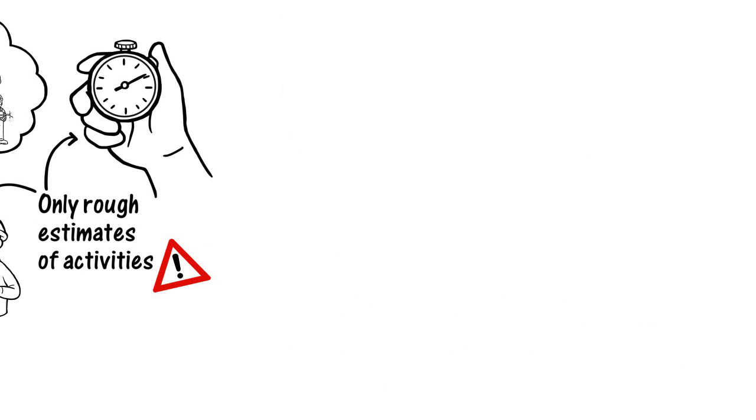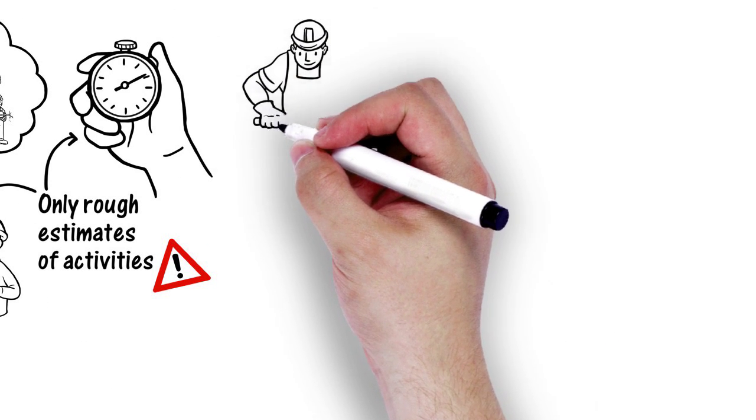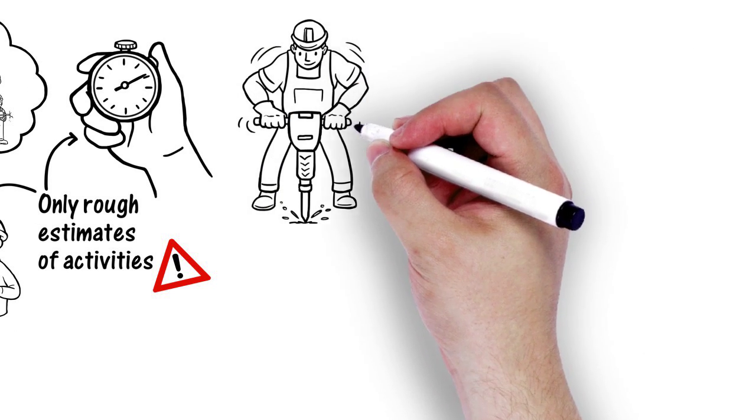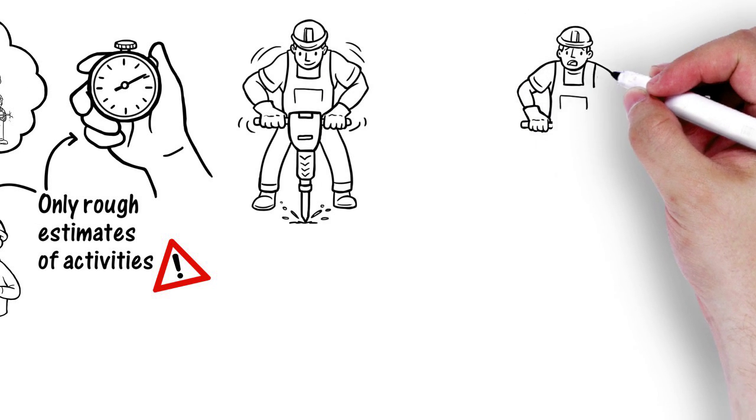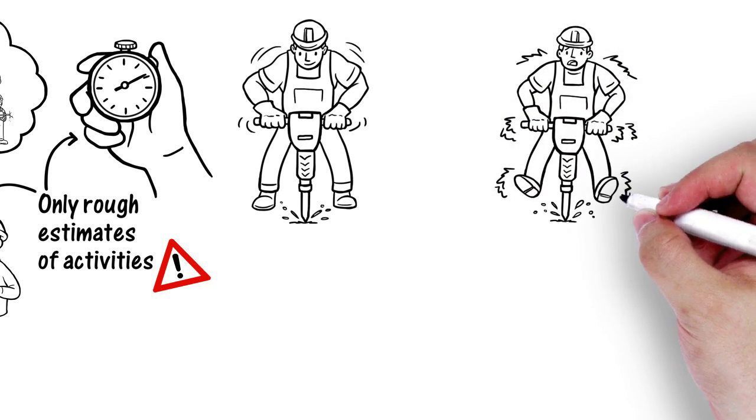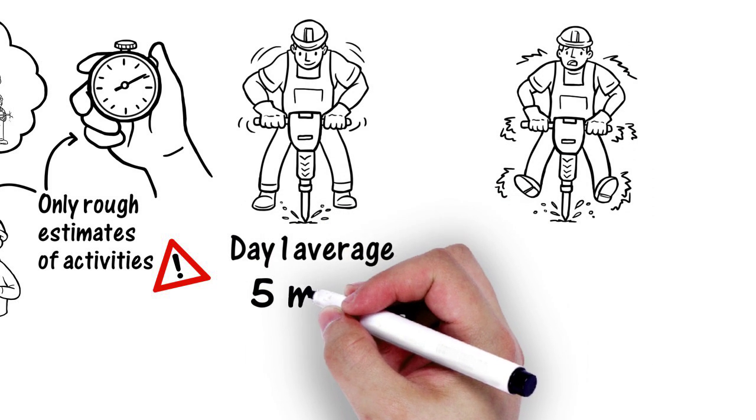Secondly, to assess exposure using the HSE point system requires calculations using the tool's vibration magnitude. In practical terms, this is either a recommended manufacturer's measurement or a measurement taken of a typical tool use.